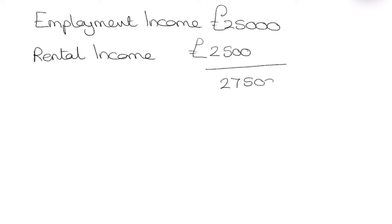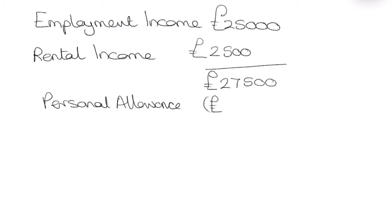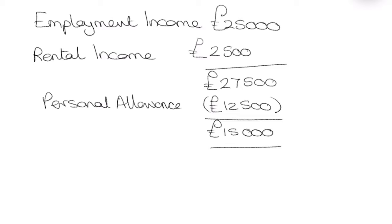So this is now our taxable income, but before we do anything further we need to take off our personal allowance, which for the current tax year we're doing this in is twelve and a half thousand. So that gives us a taxable income of fifteen thousand. Now, of this fifteen thousand we're in the basic rate tax band — we've not hit the higher rate tax band, so we're going to discount that for today. If we do our fifteen thousand at twenty percent, which is our basic rate tax band, we've now got three thousand pounds of tax to pay.